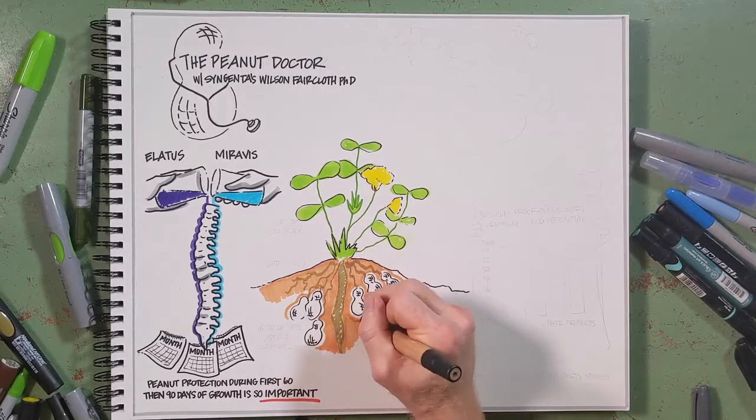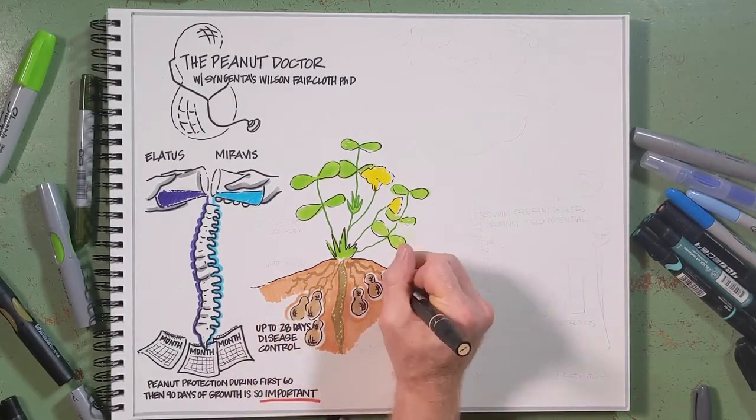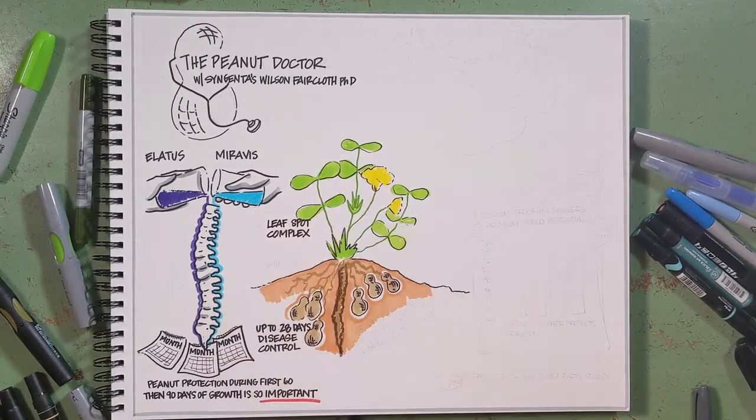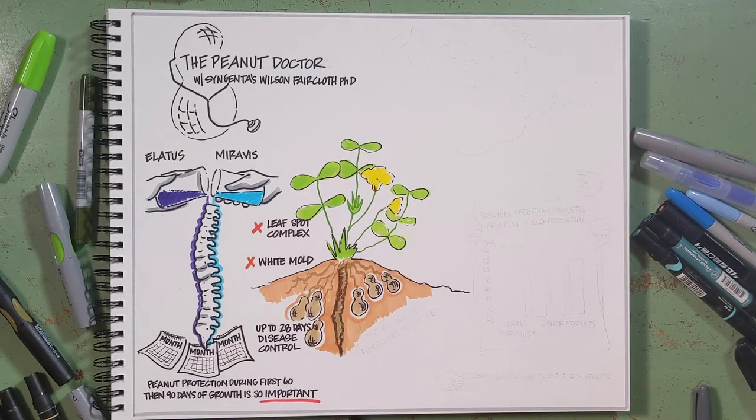We've got to protect those pods. Miravis and Elatus together have up to 28 days of control of our most important diseases in peanut, including the leaf spot complex, early and late leaf spot, white mold, and rhizoctonia, our soil-borne diseases.